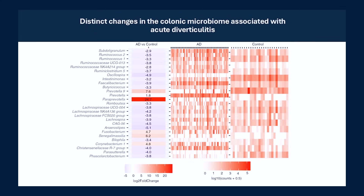Here is another paper — also a rectal swab paper. There aren't many papers in total, so we're referencing stool, swab, biopsy, and mucosal data. And what do we see? Many of the same names I'm always mentioning in my videos. The good guys — Subdoligranulum, Ruminococcus, Oscillospira, Butyricoccus, Lachnospira, Anaerostipes, and yes, F. prausnitzii — are all significantly higher in the healthy controls. While one well-established bad actor, Fusobacterium — which, by the way, is the prime suspect in colorectal cancer — is significantly higher in those with acute diverticulitis.